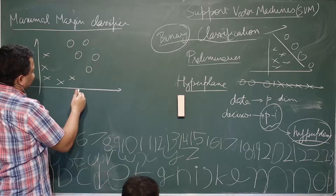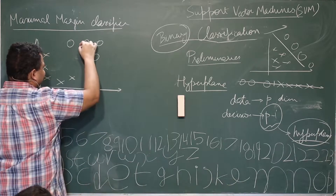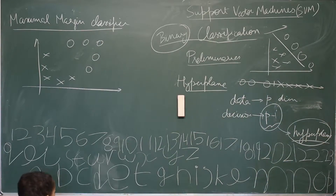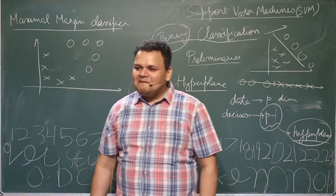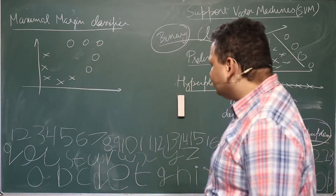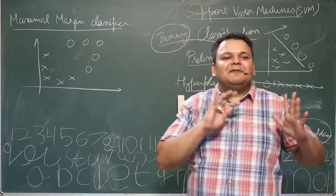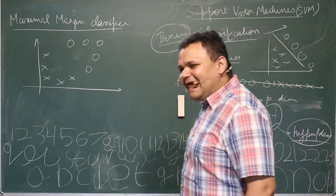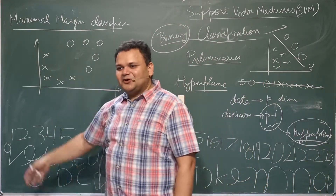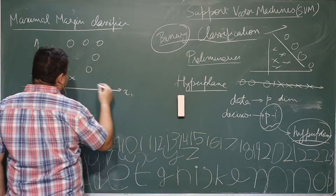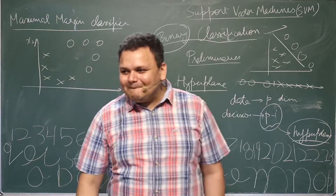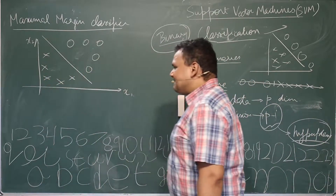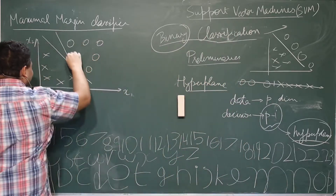So these are the points. This is how it looks like. Where will you draw your decision boundary? Between them we can draw so many lines. One of the decision boundaries can be this, another can be this — is it wrong? You don't know.